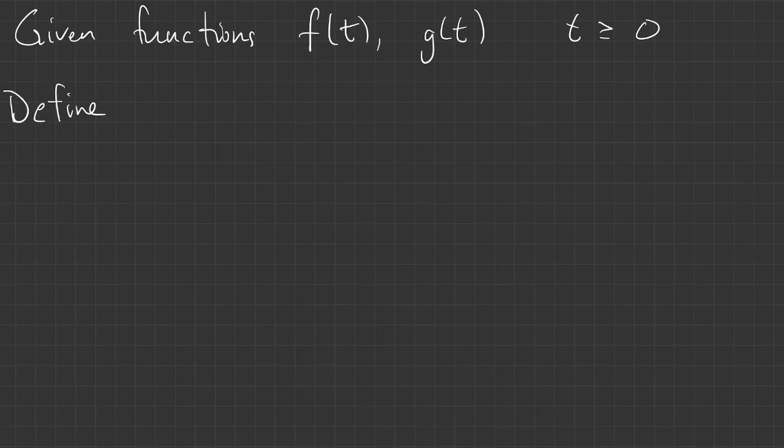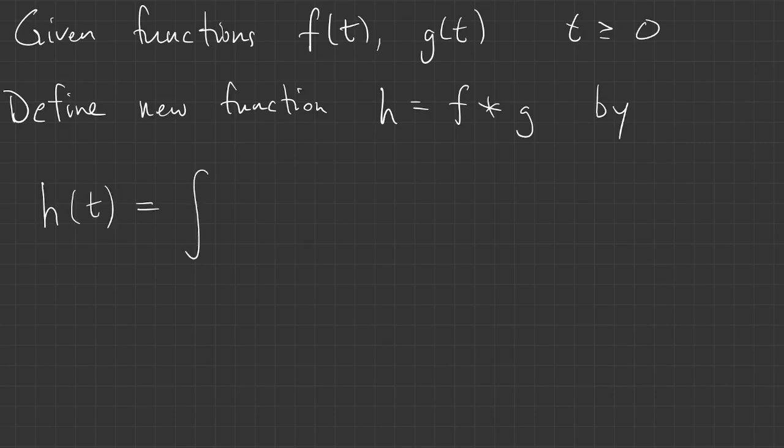Now let's say we're given two functions F and G. We can define a new function from them in a similar way. We'll call the new function H and we'll write it as F star G. The value of H at time T is an integral of F of T minus tau, G of tau, d tau.